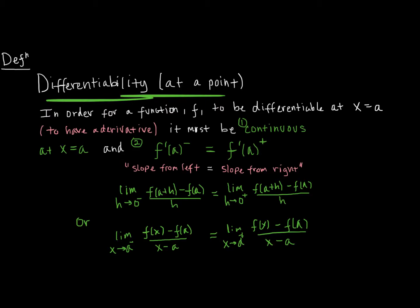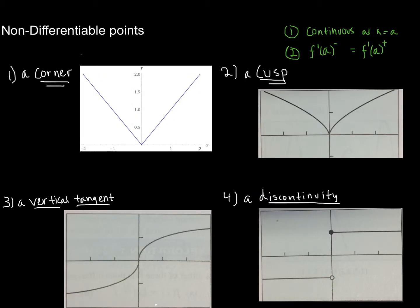Now let's look at some examples of situations where the derivative does not exist, so we can build a library of situations where things are non-differentiable. Now that we have a definition of differentiability, we can think about what happens if one of those two conditions is not satisfied — what sort of points will we come up with? We want to commit to memory the types of points that won't have a derivative. If you want to follow along, I'm on page 111.